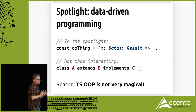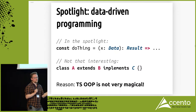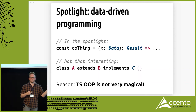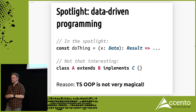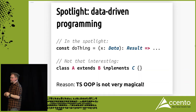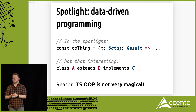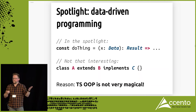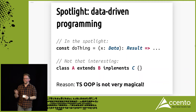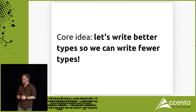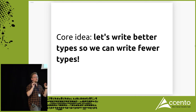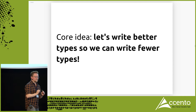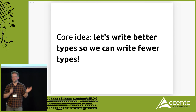We are not going to talk about object-oriented TypeScript — not so much class A extends B implements C — because this is not very exciting. The function that takes some data and returns some new data is actually more interesting. TypeScript's object-oriented programming is modeled after C#, which is a kind of reasonable language, so there's nothing interesting there. The dark arts are in the functions. My core idea is that we should write better and smarter types so that we can write fewer types, because writing types is boring and unnecessary.